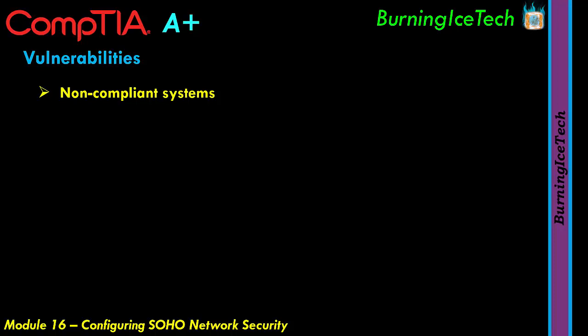Your system or your company's systems have certain criteria they need to meet — a certain edition of Windows, a certain build, the latest updates, an antivirus. All of these are conditions that need to be met, and failing to meet them means the system is non-compliant. They also mention unprotected systems — meaning you obviously don't have something like an antivirus installed, or maybe you do but it hasn't been updated quite as recently.